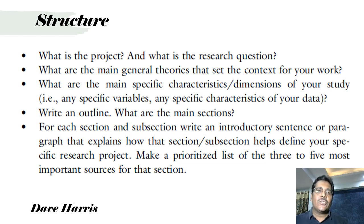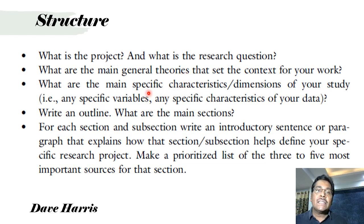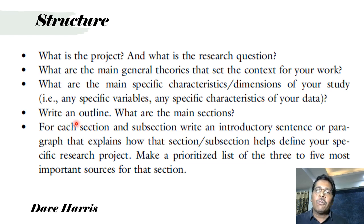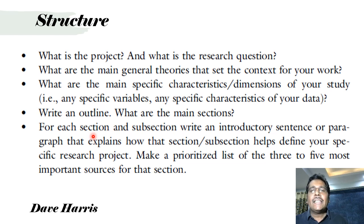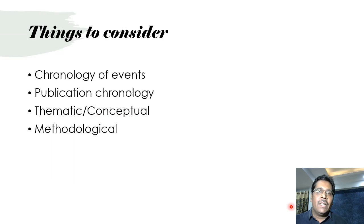From Dave Harris's book, the literature review process begins with identifying the project — defining what the project is about and what the research question is. The second important step is identifying the main general theories that set the context, the main specific dimensions, and any specific variables. Just like writing a research paper, a literature review must also have an outline with main sections and subsections, each with an introductory sentence and at least four or five important sources.